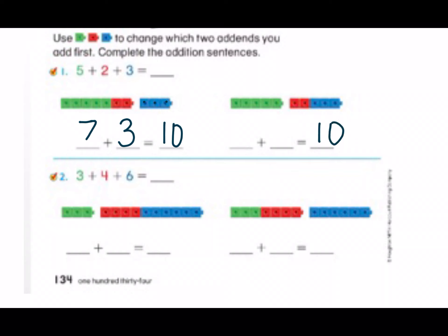We'll double check our work just to make sure. Our green cubes are alone over here, which tells us we have five, and they added two and three. Let's count how many cubes two plus three gives us: one, two, three, four, five. So using our doubles facts, we know five plus five equals ten.